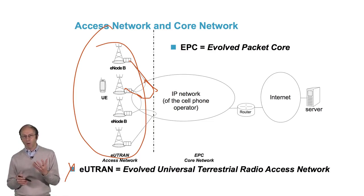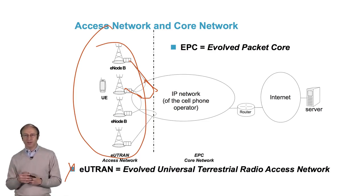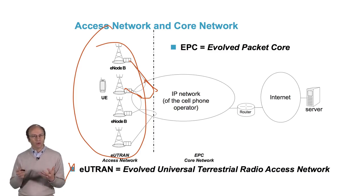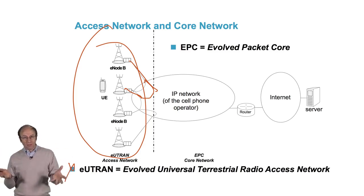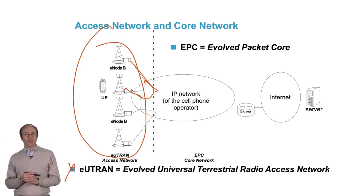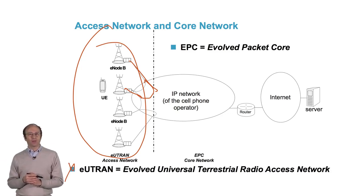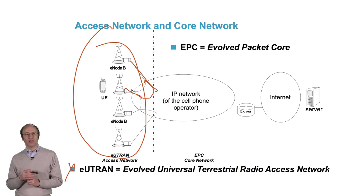We'll see in other videos what makes up the EPC. In summary, in a 4G mobile network there is a set of eNodeBs spread out over a large territory. Each eNodeB is equipped with antennas. The eNodeBs are connected to an IP network and make up the access network.